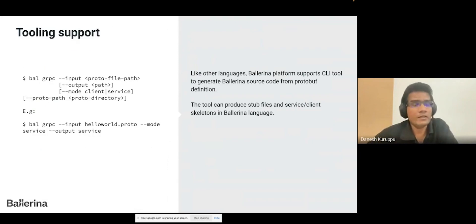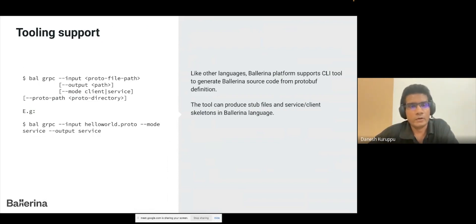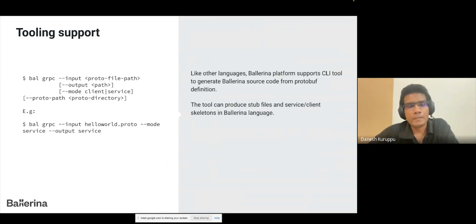First is the tooling support. Like other languages, Ballerina has a special CLI tool to generate source code from the protobuf file. We have the `bal grpc` command. You can give the input protobuf file path or directory and specify where to generate the source files. There's an additional parameter called mode — if you specify 'service', it will additionally generate a skeleton .bal file where all the remote functions are embedded, making it easy to start programming from the skeleton.